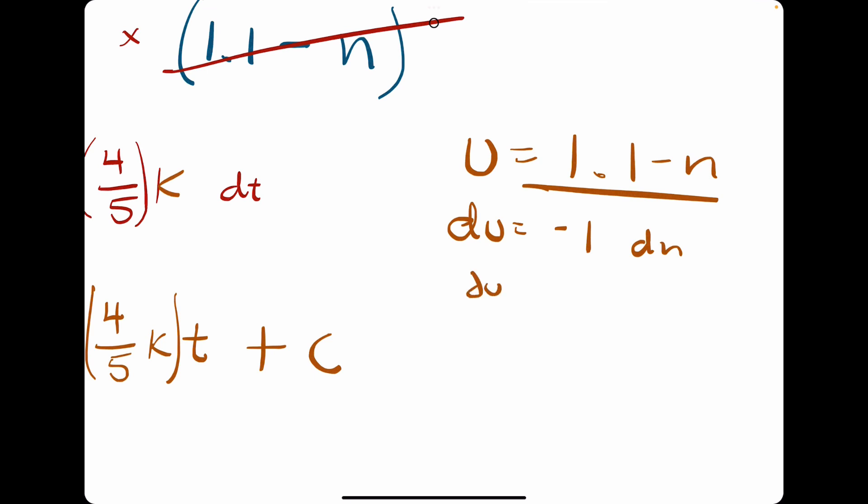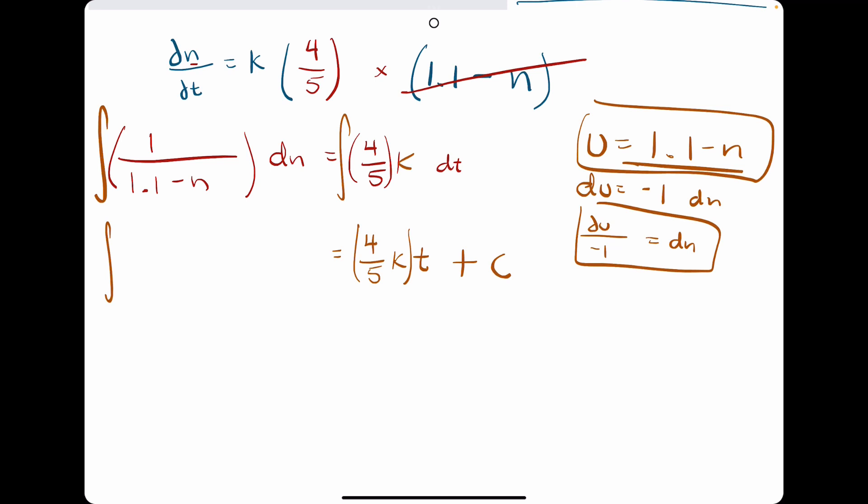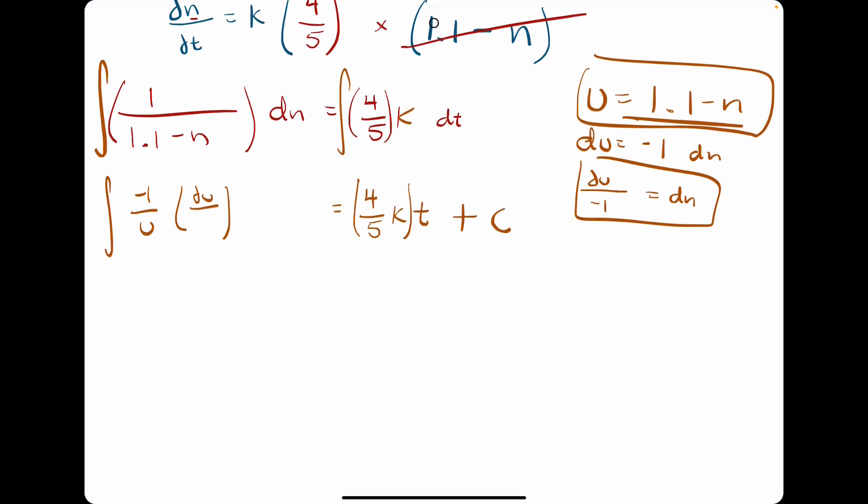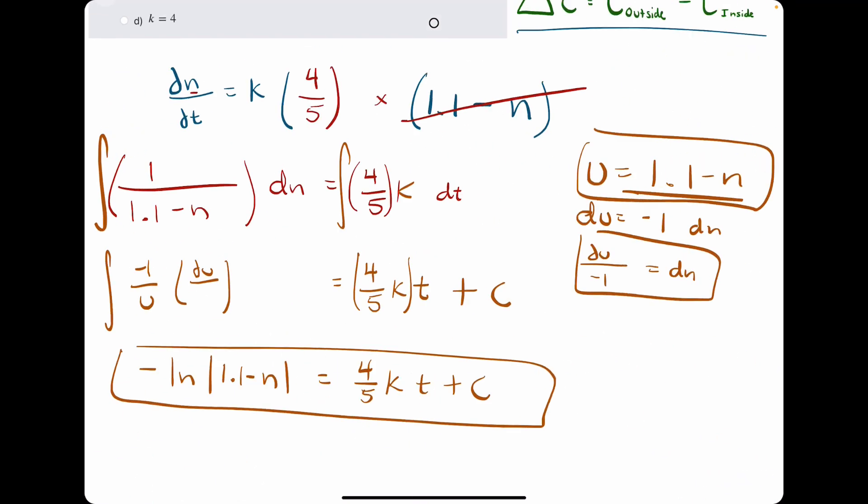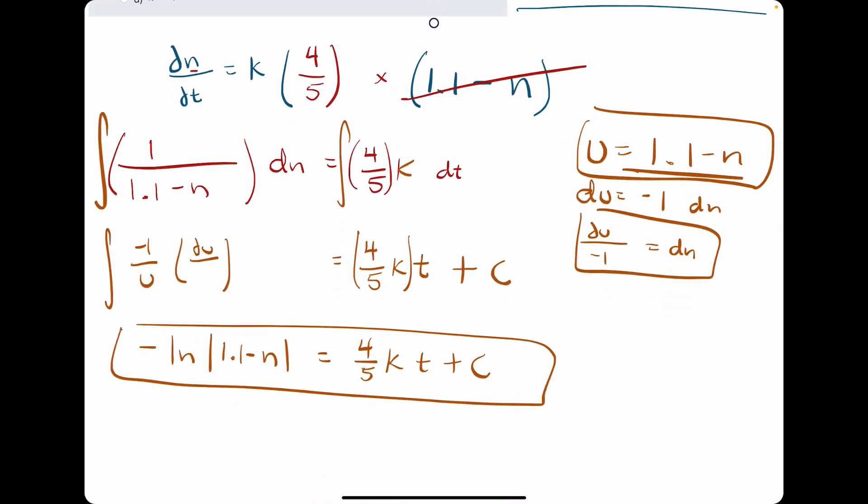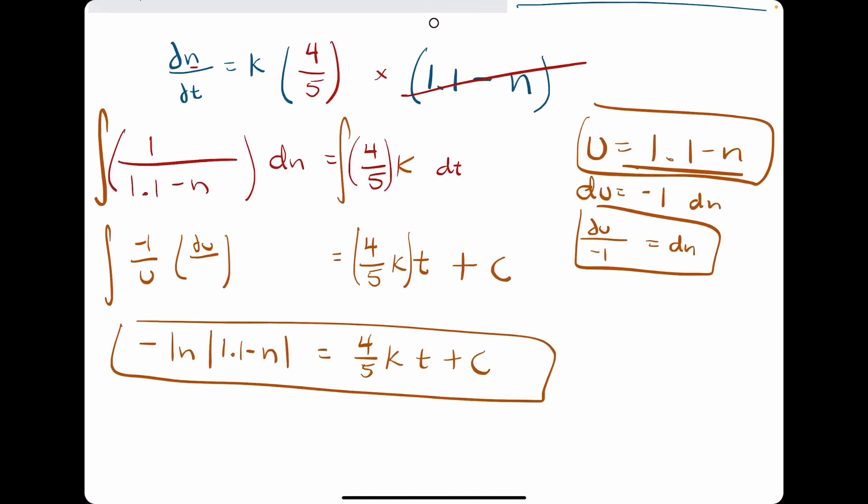And so we would solve for dn by dividing by negative 1. And then if we rewrote this integral, it would be 1 over u. And then dn is replaced with du over negative 1. So basically we have 1 over negative 1 gives us negative 1 over u. So negative 1 over u leads to negative ln of u. But then our u is just 1.1 minus n. And so in all these situations where we have just 1 point something minus n in the bottom, it goes to negative ln of absolute value of 1.1 minus n.